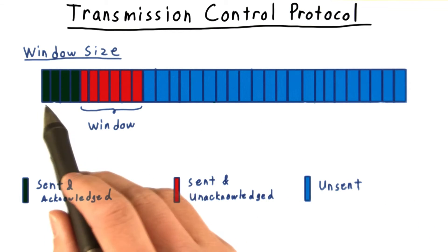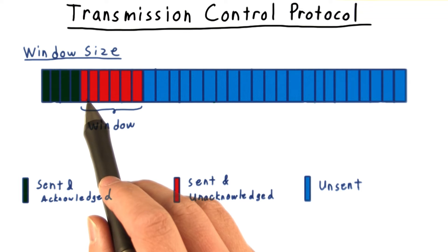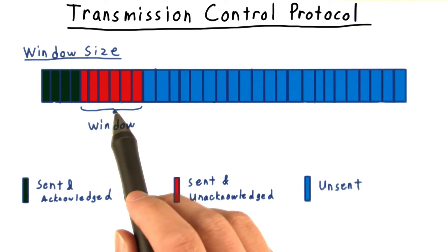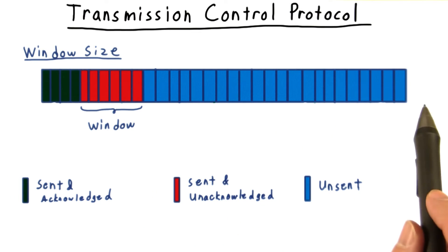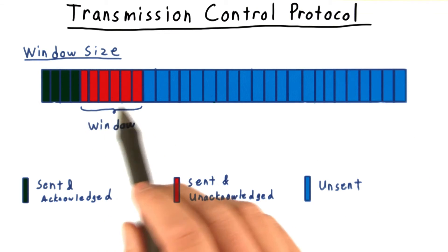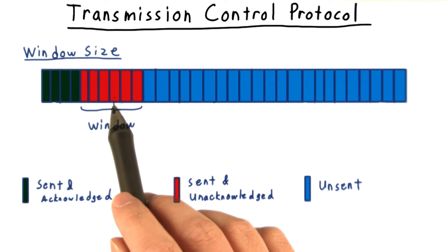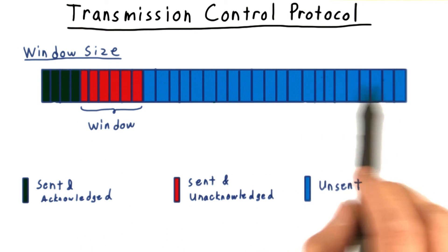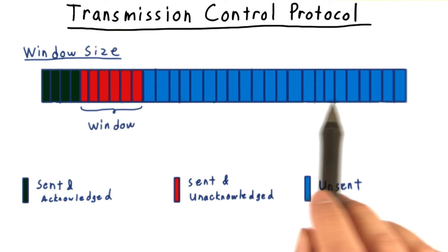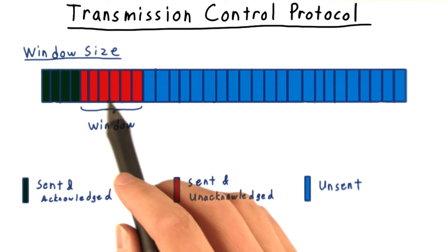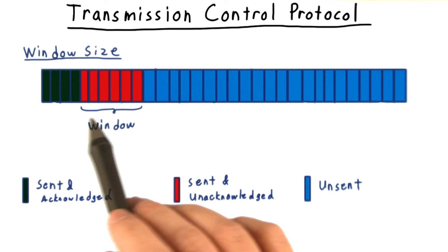We have the packets that have been sent and acknowledged, the ones that have been sent but haven't been acknowledged yet, and the unsent packets. This middle part, representing the packets sent out but not acknowledged, represent the window, and during transmission, the window will slide across to the right. The window size puts a limit on how wide this window can get.